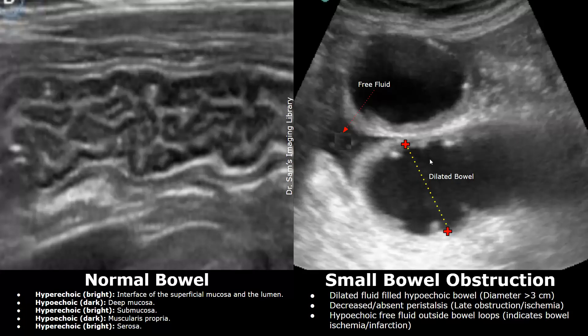There is also hypoechoic free fluid outside the bowel loops. Fluid seen outside bowel loops usually indicates bowel ischemia or infarction.